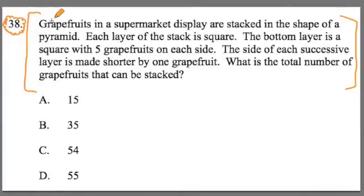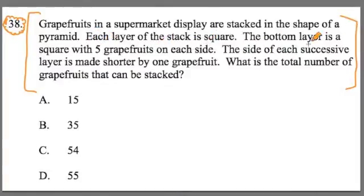It says here: grapefruits in a supermarket display are stacked in the shape of a pyramid. Each layer of the stack is square. The bottom layer is a square with five grapefruits on each side. The side of each successive layer is made shorter by one grapefruit. What is the total number of grapefruits that can be stacked? Read it over and try to solve it on your own.